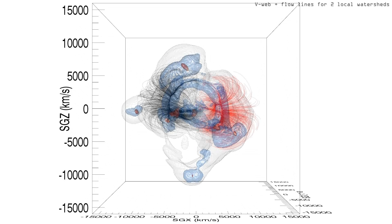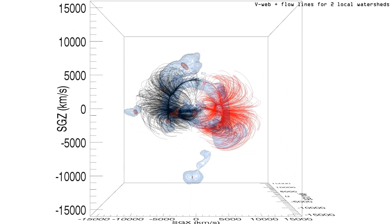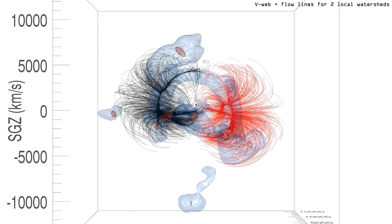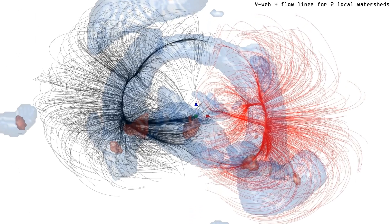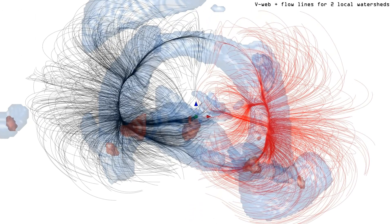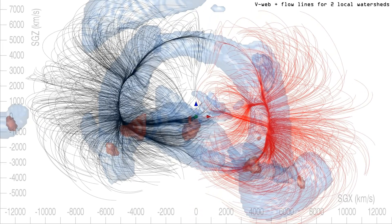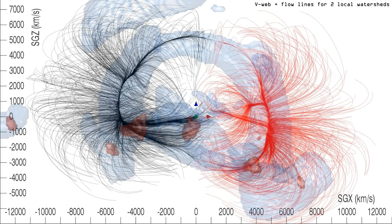We see local velocity flows in two adjacent regions. We live in the region of the black flow lines, but we are near the transition to the red flow lines associated with the Perseus-Pisces Basin of Attraction.